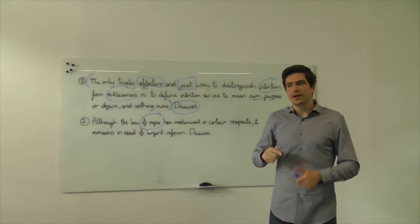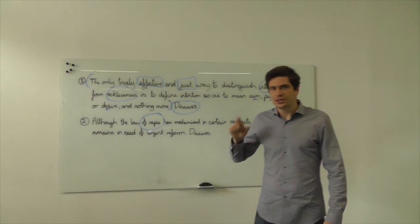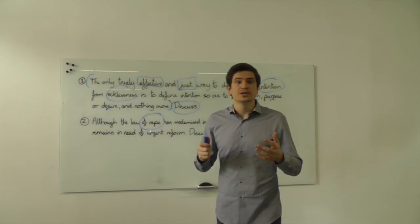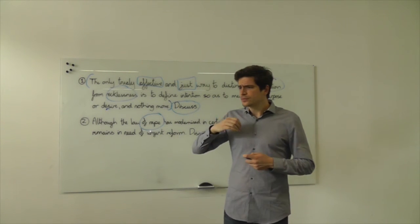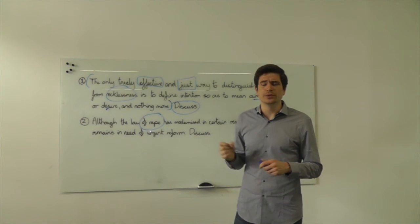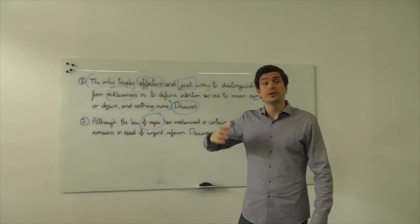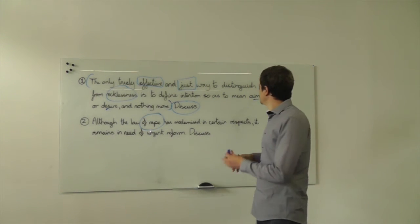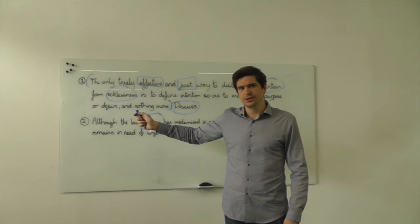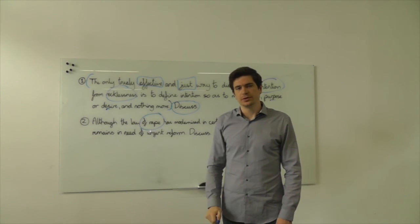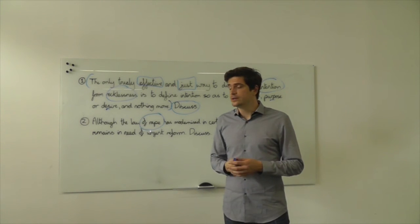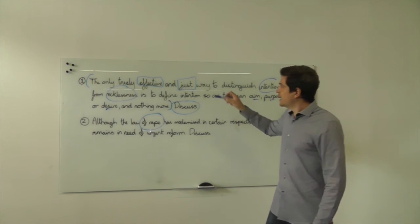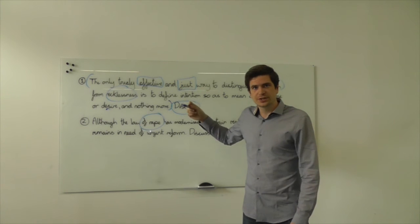But equally on the other side, there are those that argue that oblique intention is just as culpable as direct intention. The classic plane bomber scenario whereby I insure the plane, my intention is to explode the plane with a bomb so as to claim that insurance, but I also know inevitably that the passengers on board will die. Yes, it's not my aim, purpose or desire to kill the passengers, but I know it's going to happen. And to many people's minds, that's just as culpable as if it was my aim, my purpose or my desire.